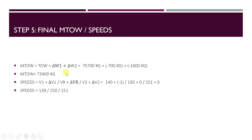After applying all corrections, our maximum takeoff weight becomes 73,400 kg and our speeds become V1 = 139, VR = 150, and V2 = 151. These are the final maximum takeoff weight and speeds allowed under the given wind conditions and configuration. Thank you for watching this video.